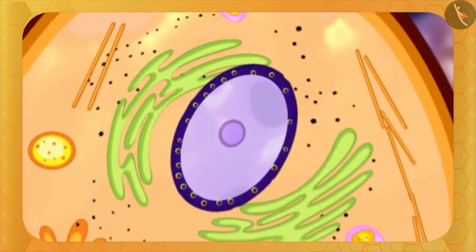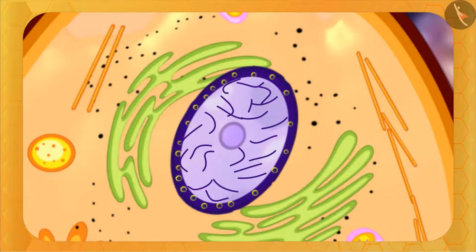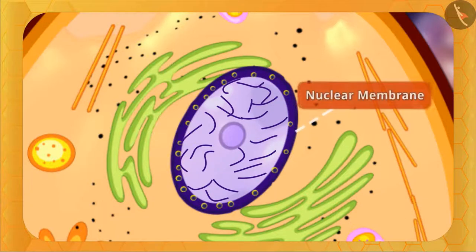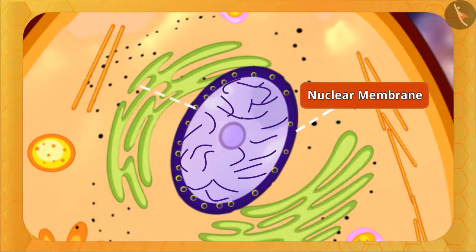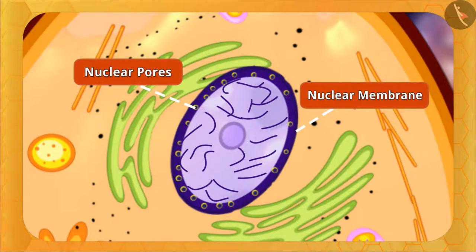In the same way, the nucleus directs and controls all processes in the cell. If we zoom in on the nucleus, it is spherical in shape. Its outer structure is a two-layer membrane called the nuclear membrane, similar in function and structure to the cell membrane, which keeps the contents inside the nucleus separate from other parts of the cell.